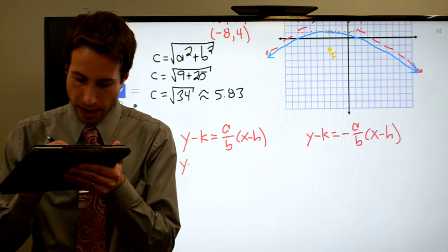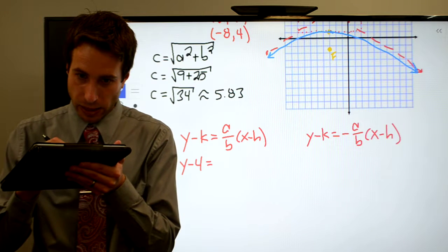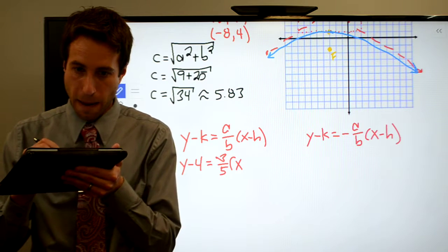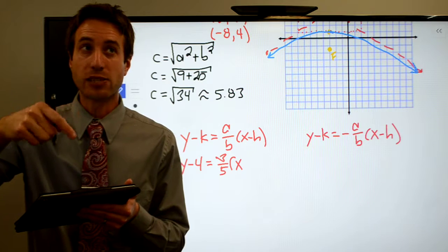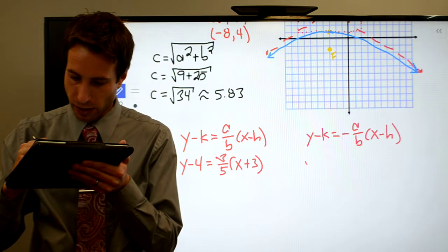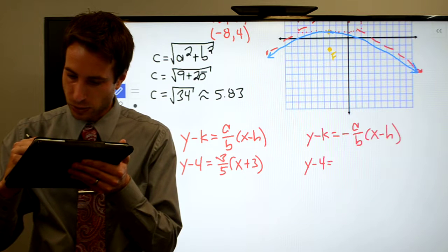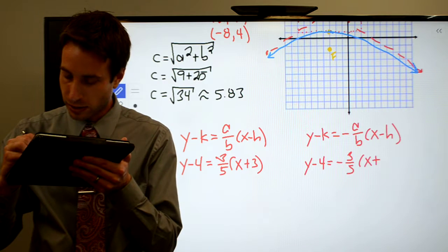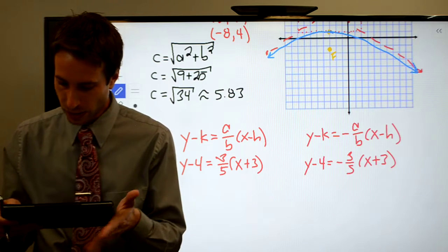I've got y minus 4 is equal to 3 over 5x. h is a minus 3, so minus a minus, so that's going to be a plus 3. Same thing over here. y minus 4 is equal to negative 3 fifths x plus 3.